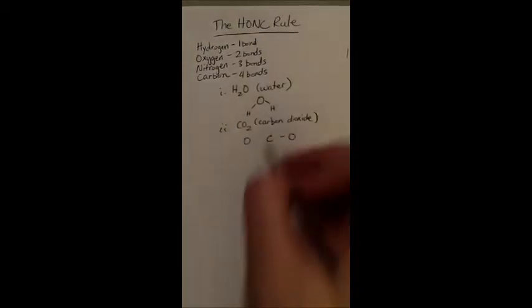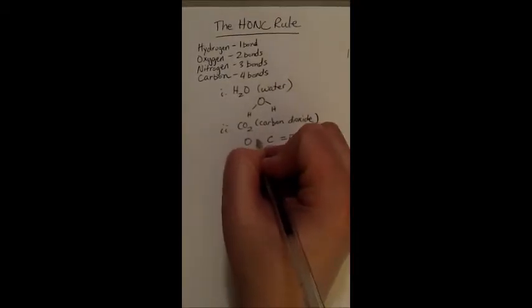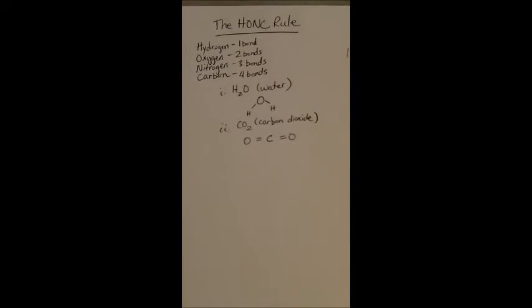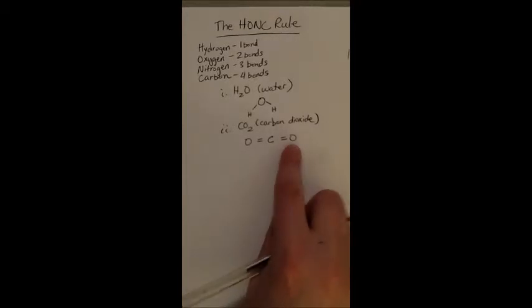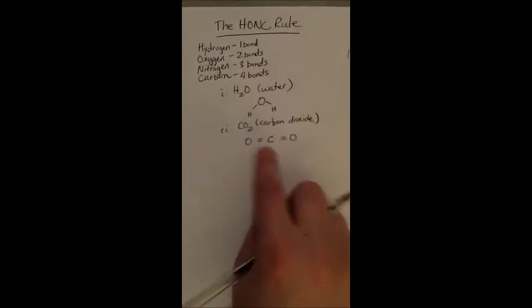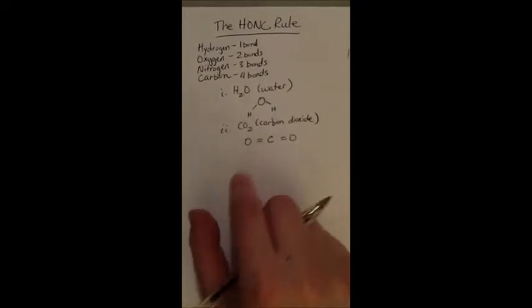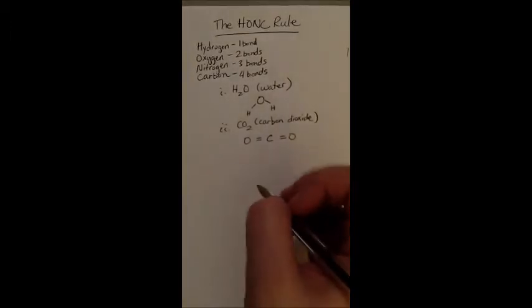So we're actually going to put those bonds with the only thing that it can bond to, which is the carbon. And then the carbon and the other oxygen also have two bonds. So we have a double bond between the oxygen and the carbon, and then another double bond between the other oxygen and the carbon. That leaves four bonds for the carbon and two bonds for each of the oxygens.